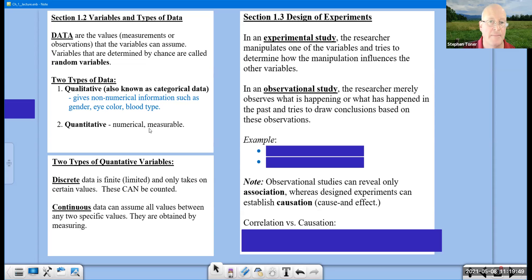Usually, the qualitative data is in a psychology sort of class or another humanities type of course. The quantitative data that we have here can further be subcategorized as either discrete or continuous. Discrete is finite or limited and can only take on certain values.